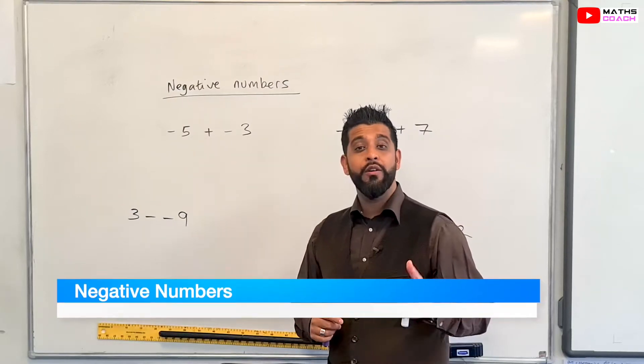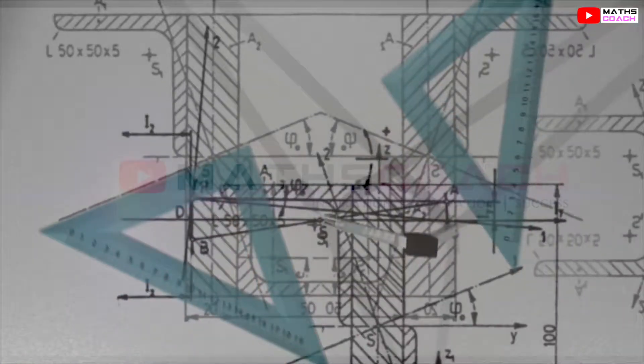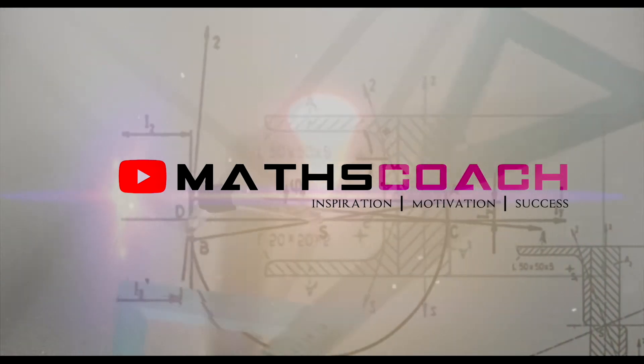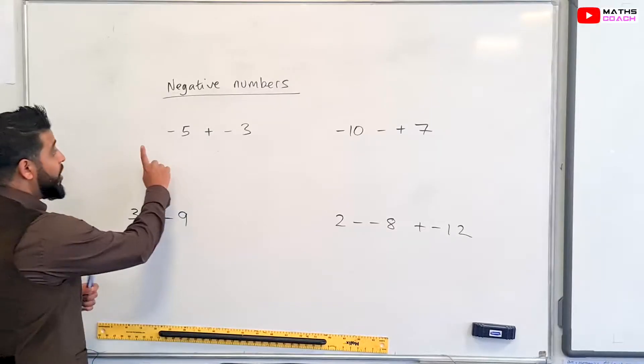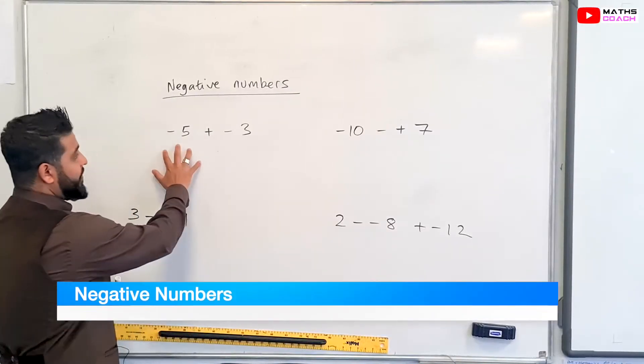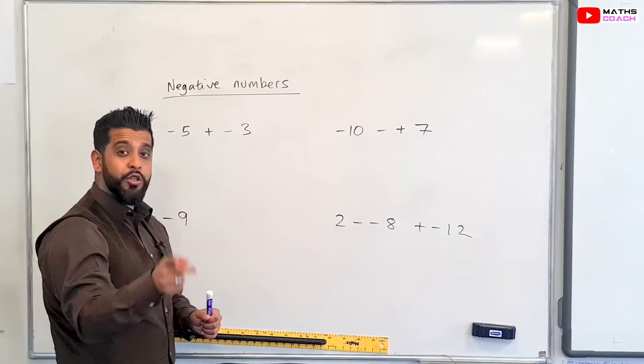In this lesson, I'm going to be reminding you on how to deal with negative numbers. We have four questions here on the board. We have this, this, this, and that, and we're going to do it in that order.